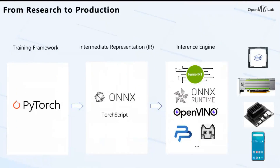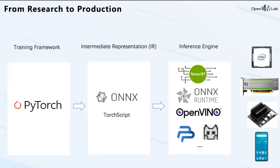Besides developing toolboxes for research, we step forward to production. From research to production, what we need to do is deploy the model on specific devices such as CPU, GPU, or mobile phones. When we have developed a novel algorithm and obtained a PyTorch model after training, a general pipeline for model deployment is: first convert to some intermediate representation, for example ONNX, then convert to the format allowed by the inference engine on the target device. During this process, we need to resolve issues such as how to convert the model and how to implement operators not supported by the IR or the inference engine.